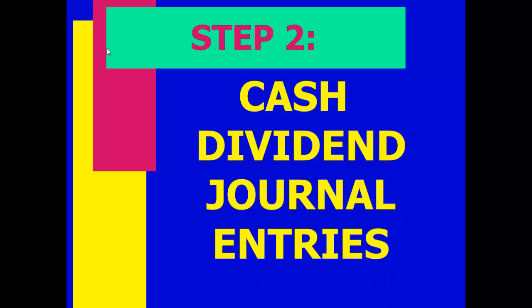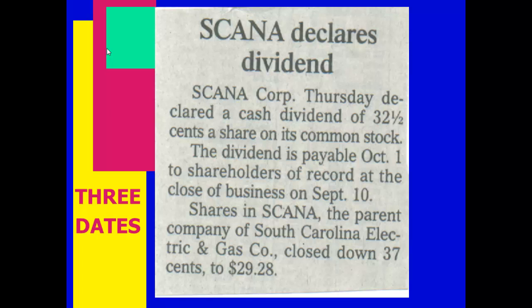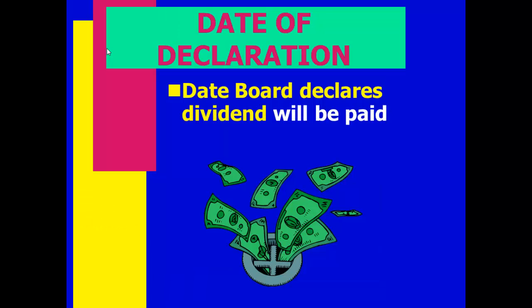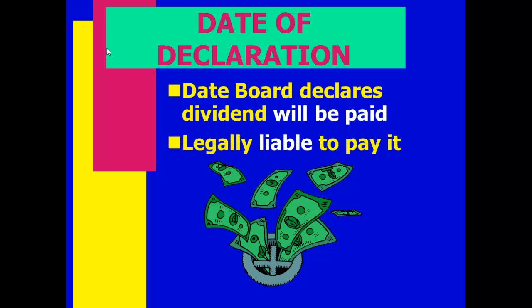The last topic is journal entries for a cash dividend. Using a real example: a company declared a cash dividend of $0.325 per share, payable October 1st to shareholders of record at the close of business on September 10th. There are three dates: the declaration date (Thursday), the record date (September 10th), and the payment date (October 1st). Back in Chapter 2, paying dividends meant debit Dividends and credit Cash.